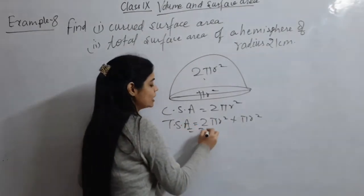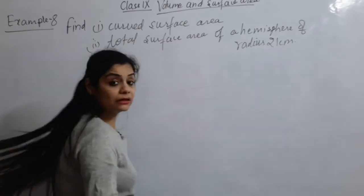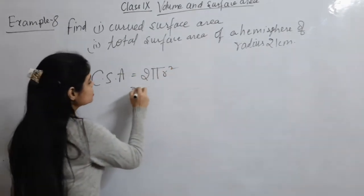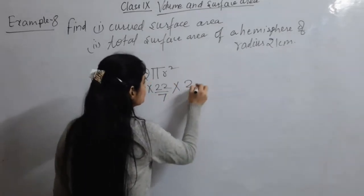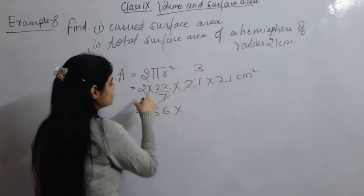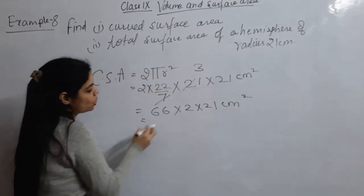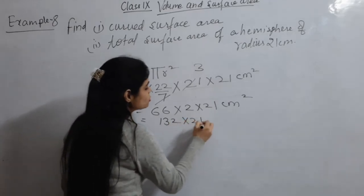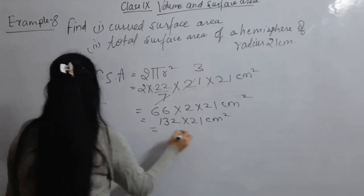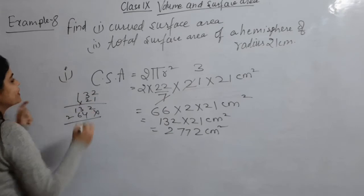We have to find the curved surface area with radius = 21 cm. Curved surface area = 2 π r² = 2 × (22/7) × 21 × 21 cm². The 7 and 21 simplify: 7 threes are 21, so we get 66 × 2 × 21 = 132 × 21 = 2772 cm².